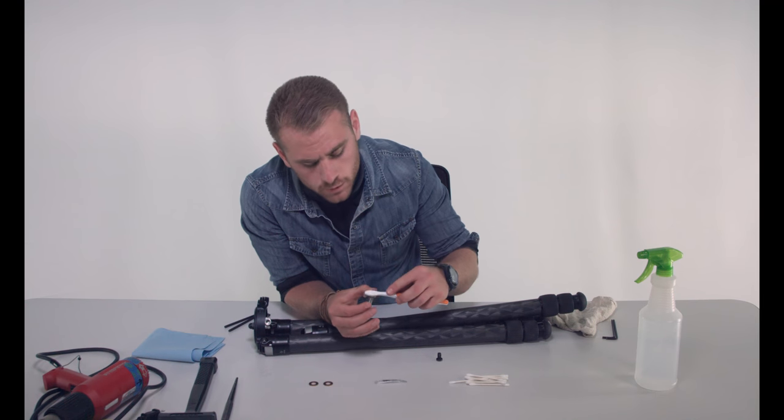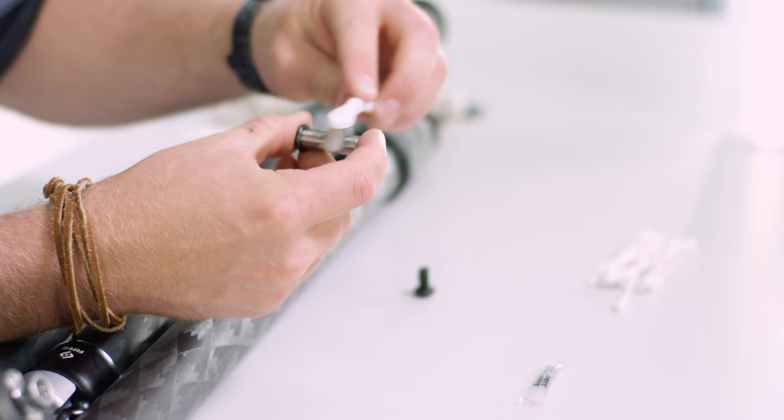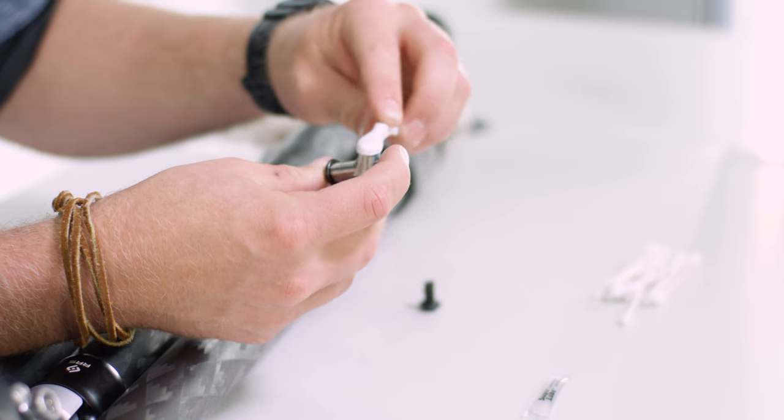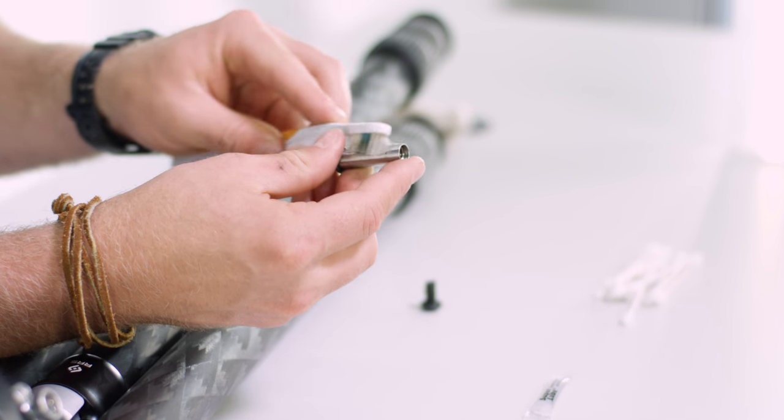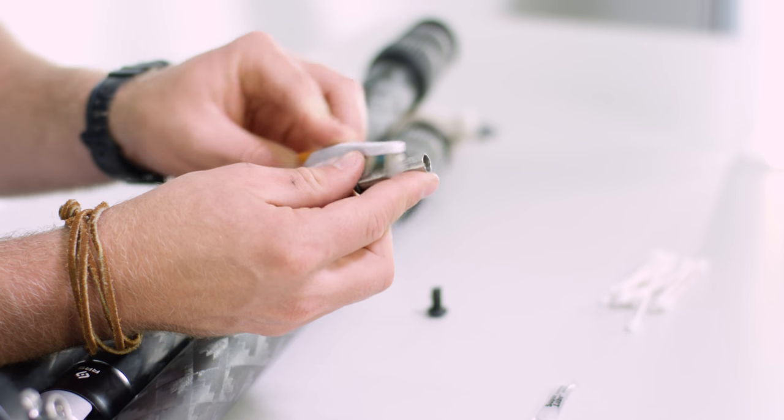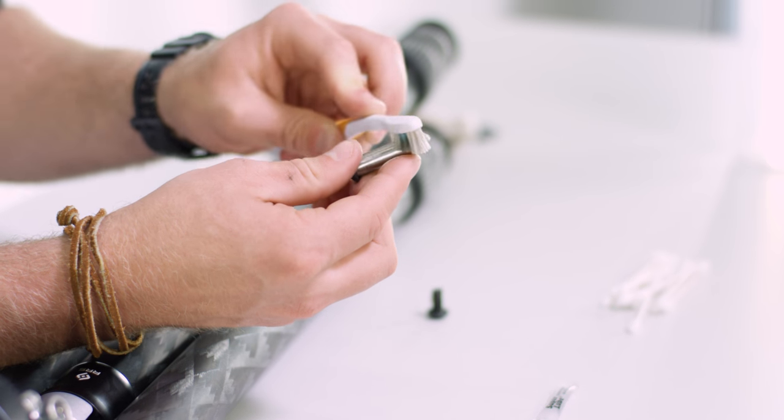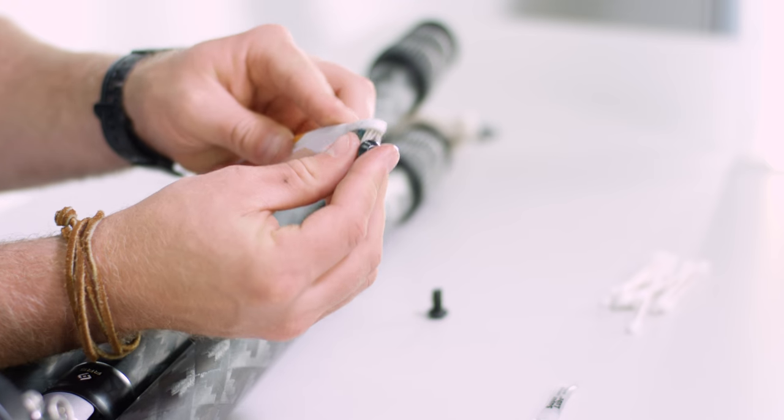For cleaning the axle piece you'll need to take a brush and work all the dirt and corrosion off. Since this piece has the most exposure it might take a little bit to get all the grime off.